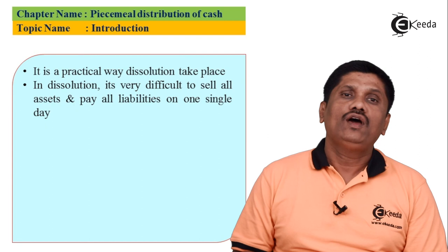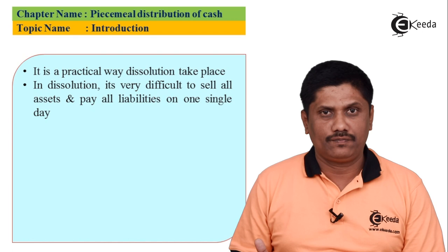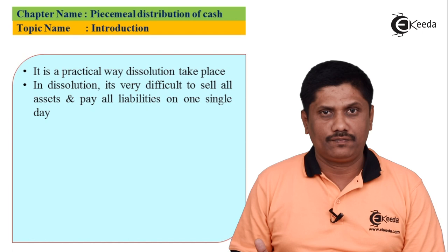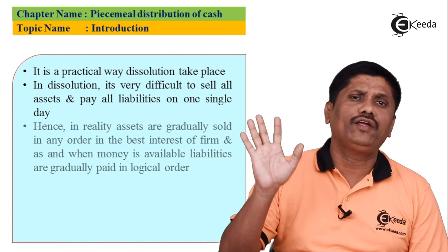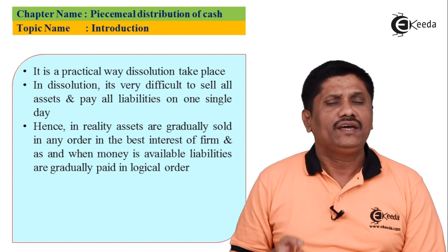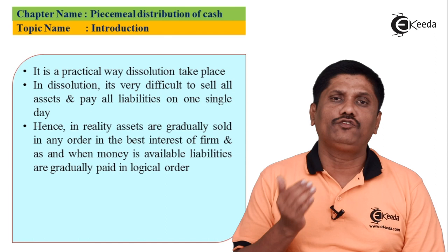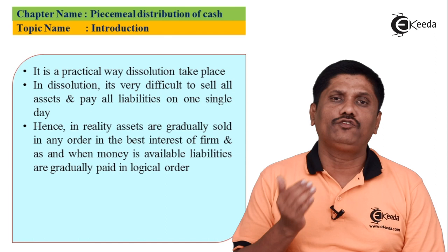At any stage, if you find multiple liabilities and available cash is insufficient, that available cash is allocated in the ratio of the amount of claim of those liabilities. For example, if available cash is ₹1 lakh and liabilities are ₹30,000, ₹20,000, and ₹60,000 — totaling ₹1,10,000 — the ₹1 lakh is paid in the ratio 3:2:6. At any point, if cash is short to pay a set of liabilities, allocate it in the ratio of their claim amounts.